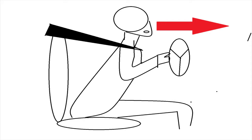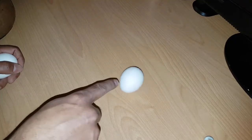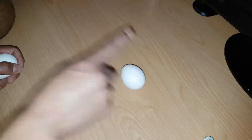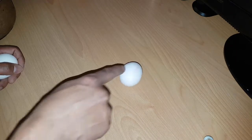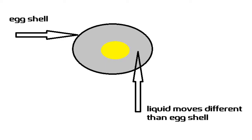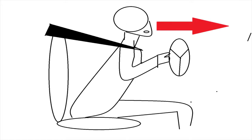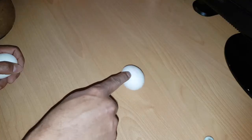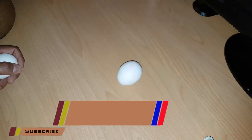The same thing happens in the raw egg. By touching the eggshell, I stop the egg, but the liquid inside keeps moving because of its inertia of motion. As a result, it does not stop spinning immediately.